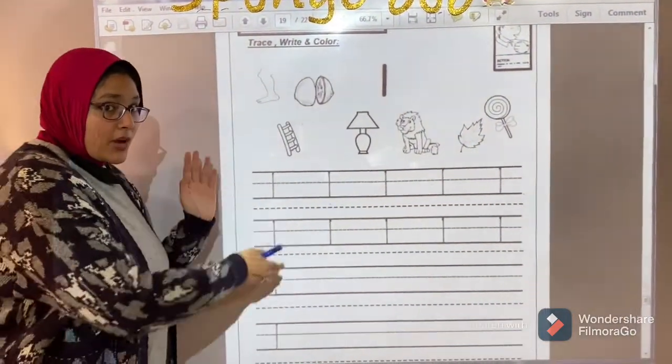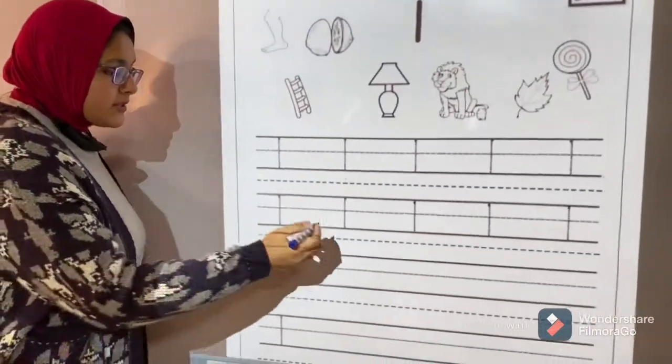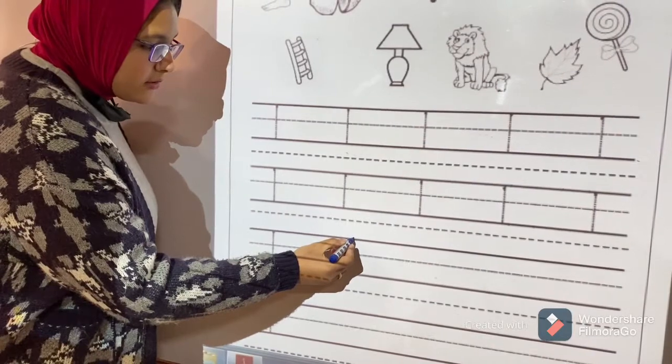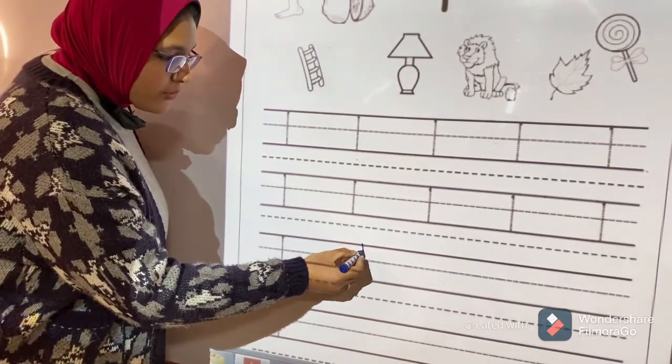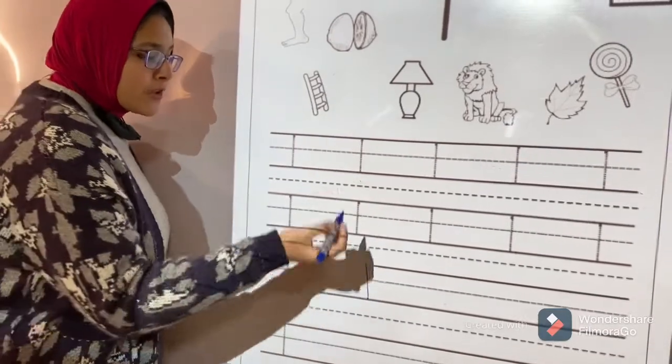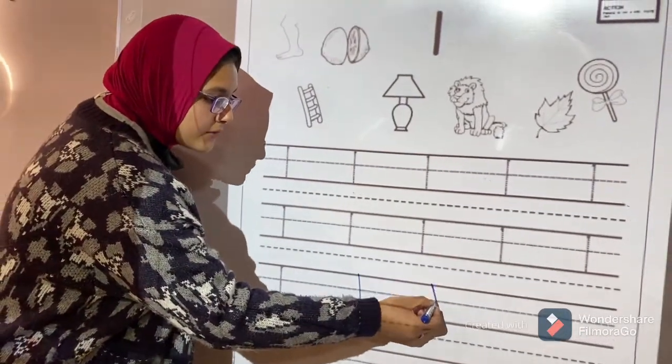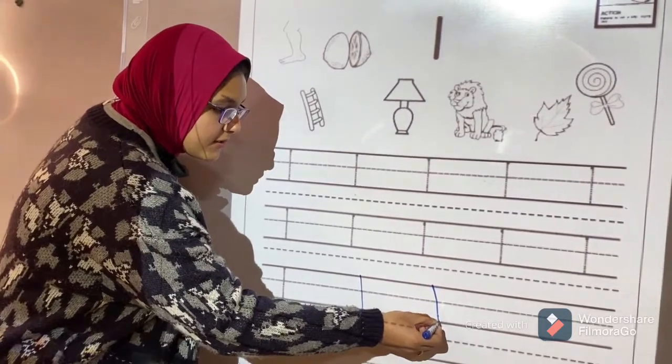Now we are going to write the sound together. We will put our pencil on that line like this and we will go down, down, down, straight line. Again, we will put our pencil here and we will go down, down, straight line.